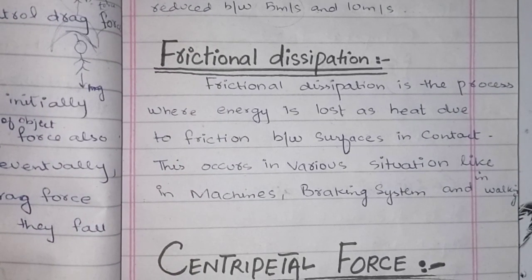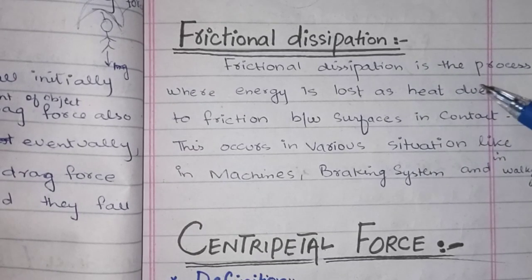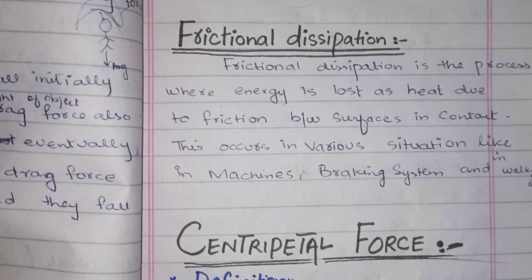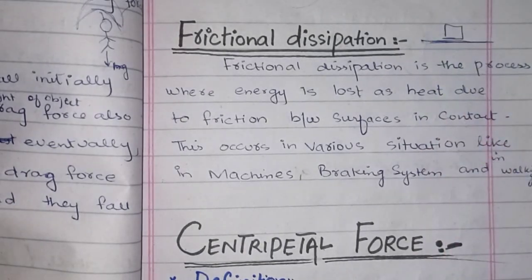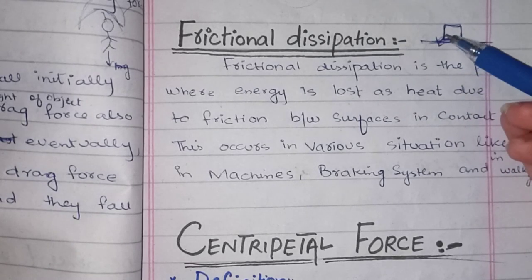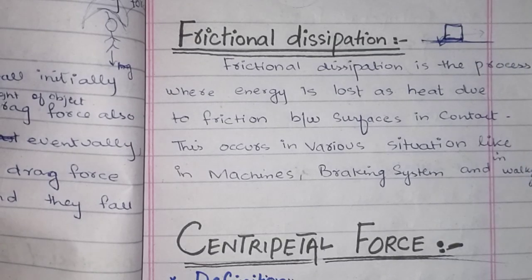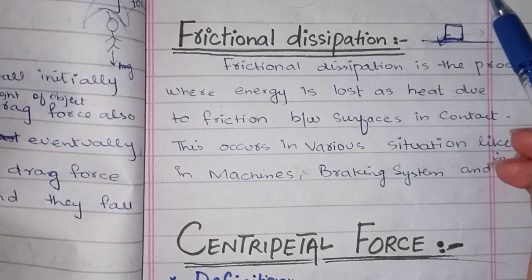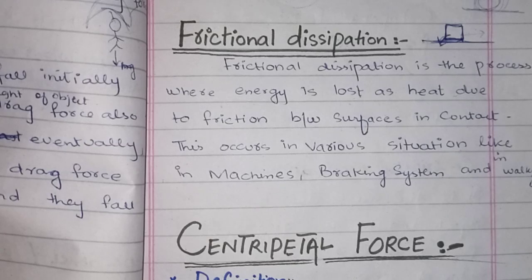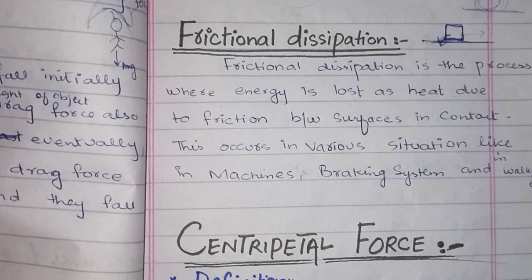Friction dissipation is the process where energy is lost as heat due to friction. When two surfaces are in contact, energy is reduced through friction. For example, with a tire rotating, friction causes energy to be lost as heat. If there is too much friction, the energy is dissipated and the motion slows. This is why managing friction is important — energy may be lost as heat through friction between surfaces.